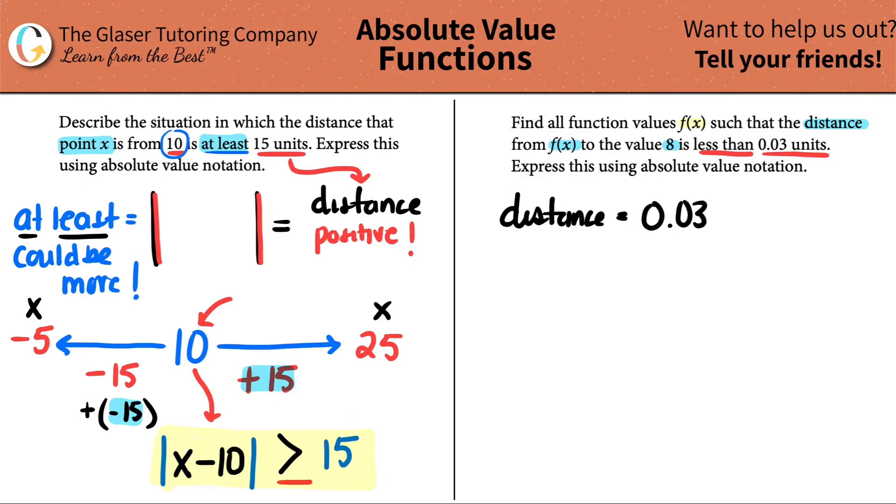0.03. So I know that whatever my absolute value function is inside here has to be, and let's just put an equal sign for now, it has to be equal to 0.03. Now let's first try to figure out, is it equal really? It's said here that it's less than 0.03. So it can't be equal to, it has to be less.